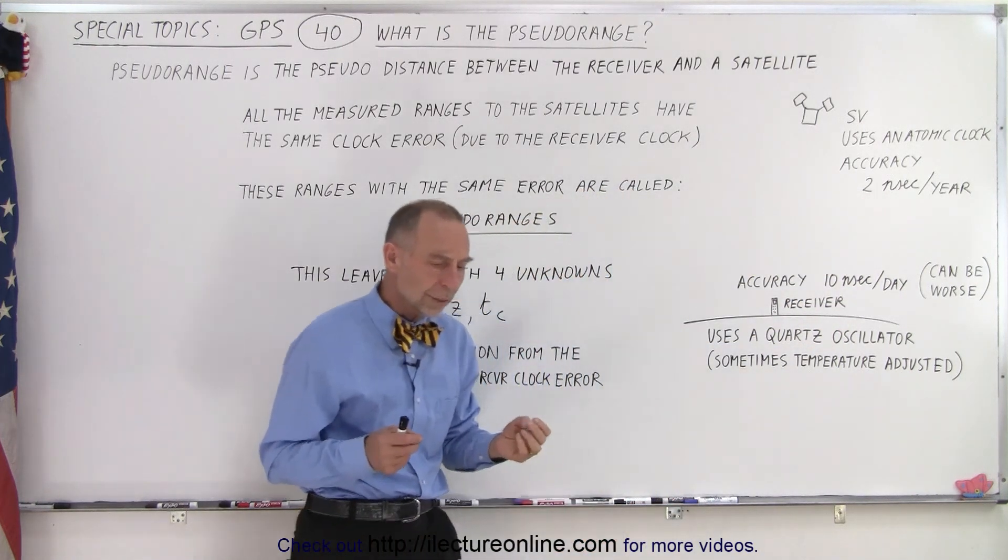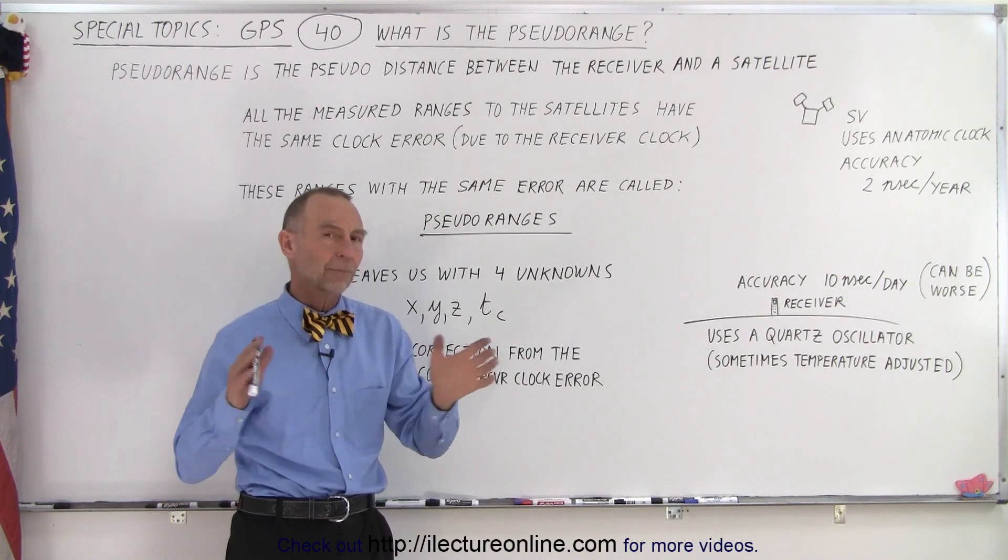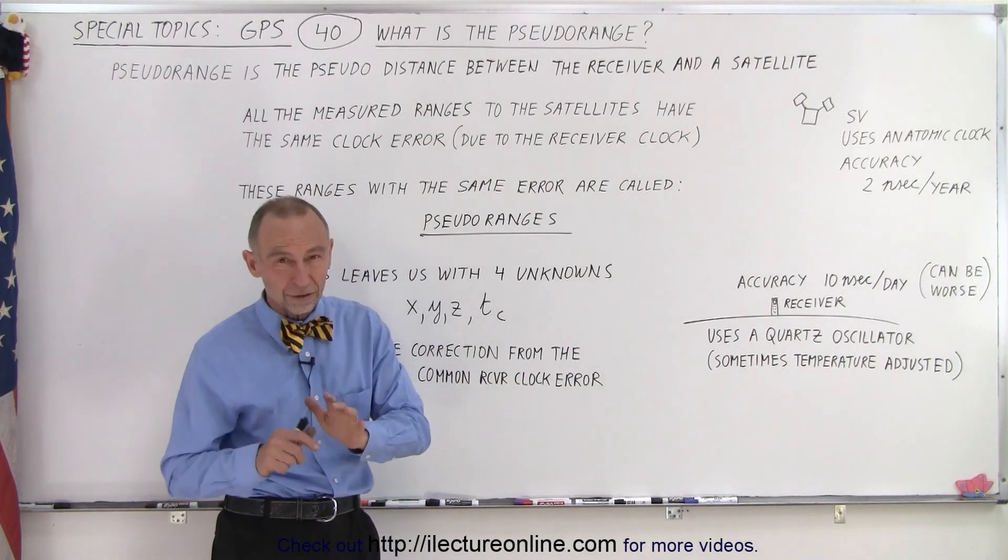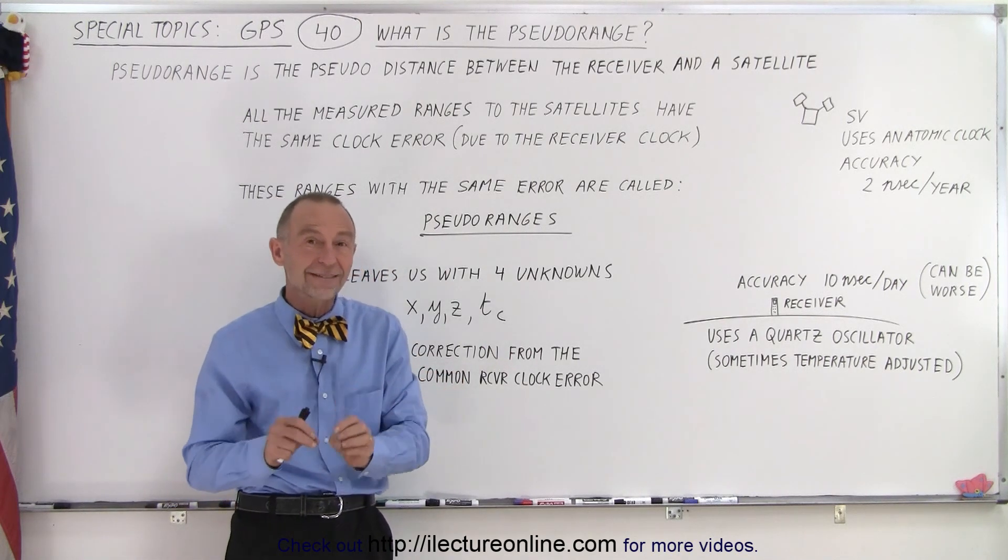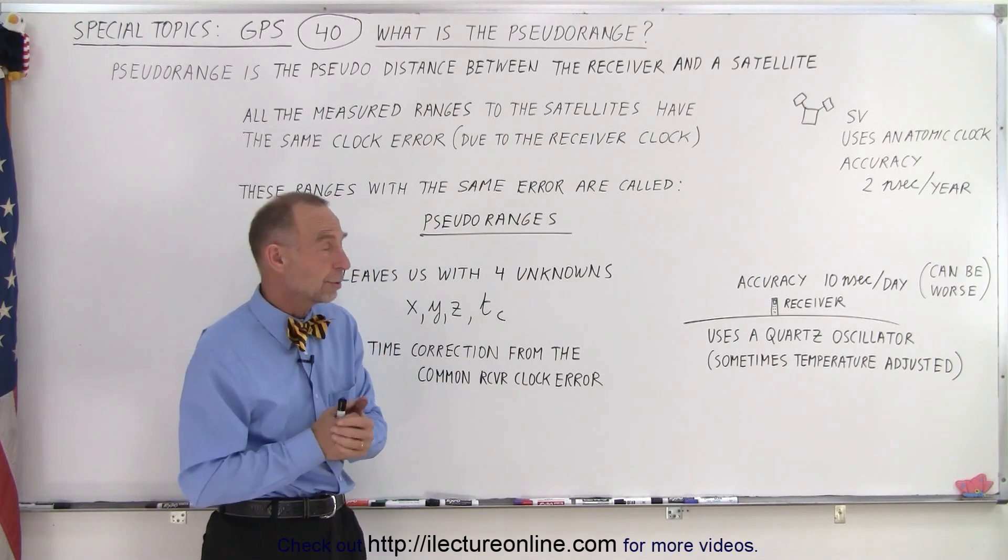So what we can do initially is assume that the clock on the satellite is absolutely correct. Of course we do need to make some adjustments for it because it's not going to be exactly the same as the exact GPS time, and we'll tell you more about that later.